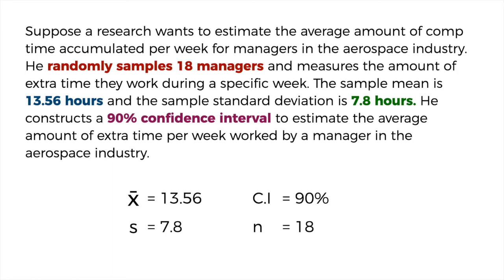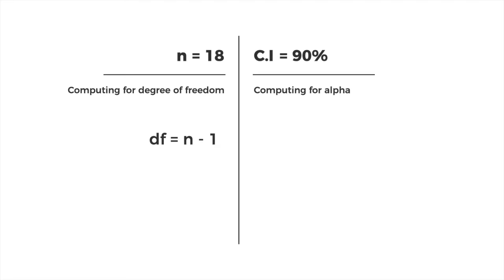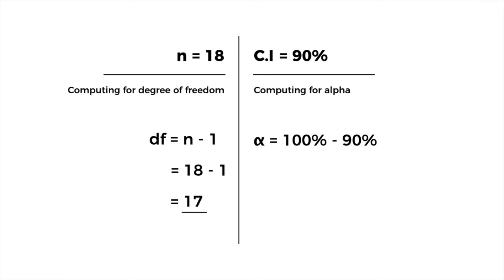Since we are using the T-distribution instead of the Z-score, we first need to compute the degrees of freedom and alpha. The degrees of freedom is N minus 1: 18 minus 1 equals 17. Alpha equals 100% minus the confidence interval, giving us 10%. We then divide 10% by 2, because the equation is plus and minus — dividing the normal distribution into two parts. This gives us T with alpha of 0.05 and degrees of freedom of 17.